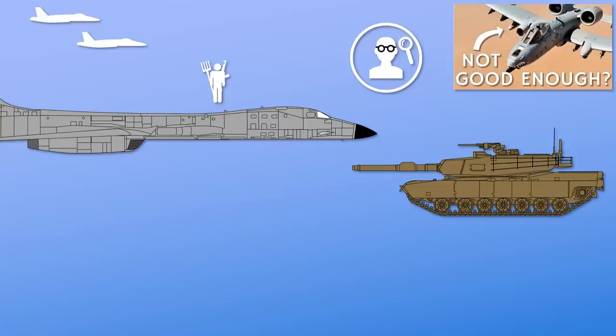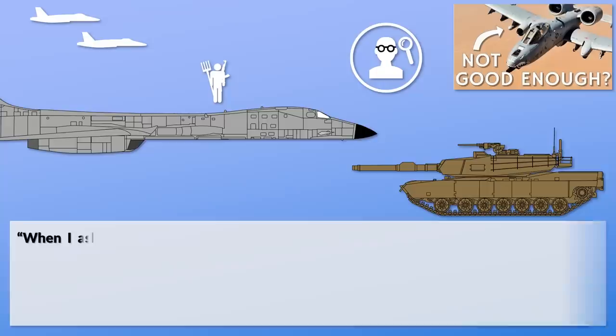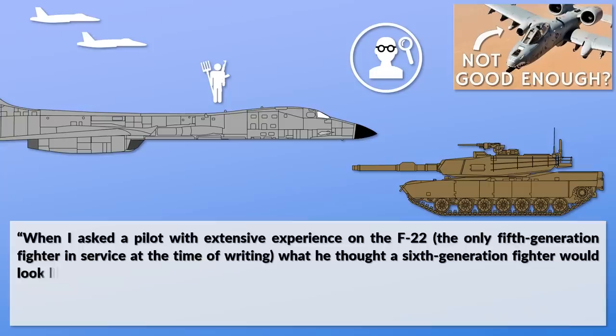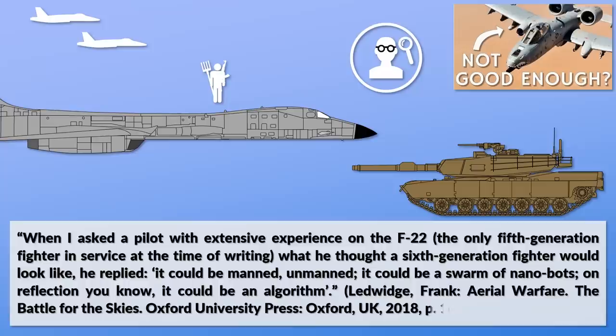When asked a pilot with extensive experience on the F-22 — the only 5th generation fighter in service at the time of writing — what he thought a 6th generation fighter would look like, he replied: 'It could be manned, unmanned, it could be a swarm of nanobots — on reflection you know, it could be an algorithm.'